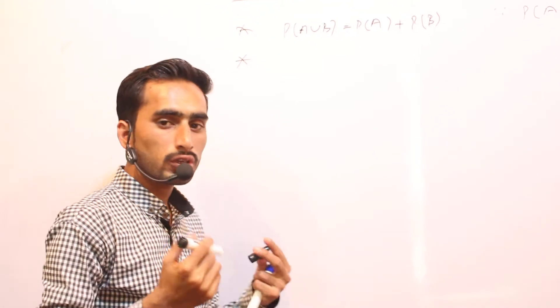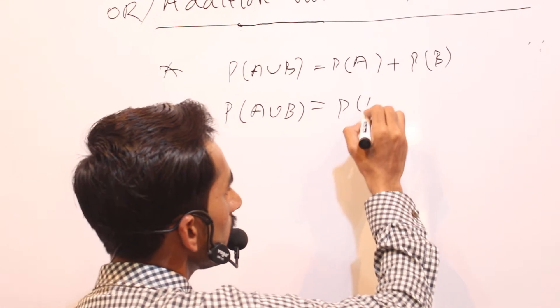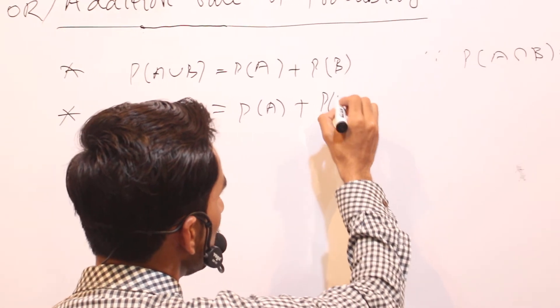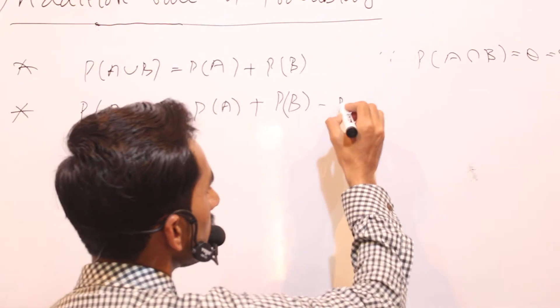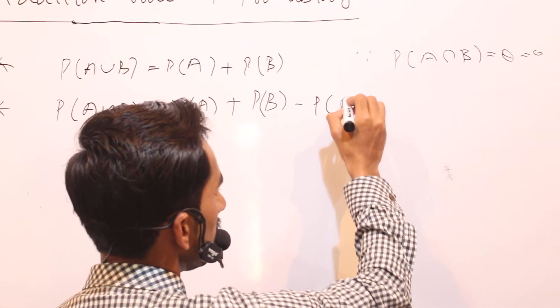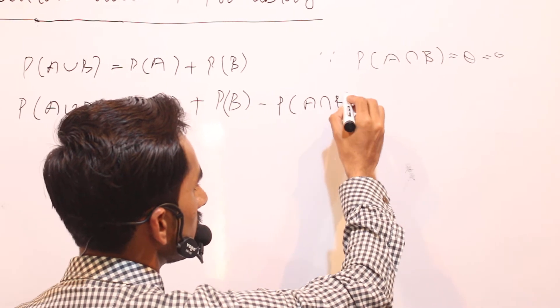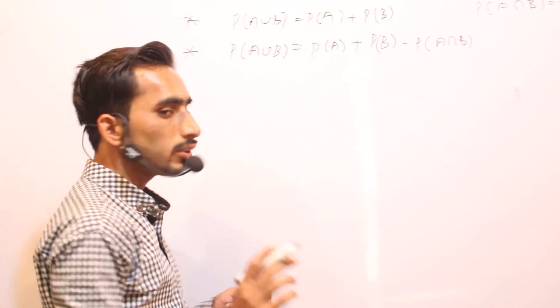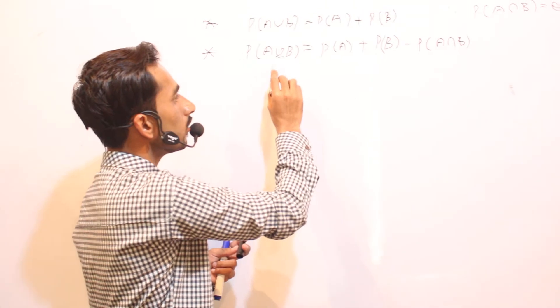The second condition is when we have non-mutually exclusive events. Then the addition rule can be written as: probability of A union B is equal to probability of A plus probability of B minus probability of A intersection B.